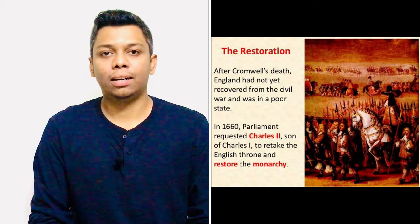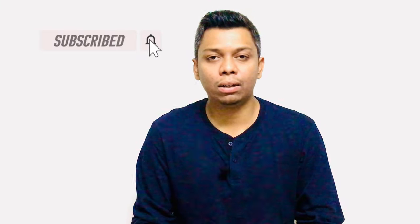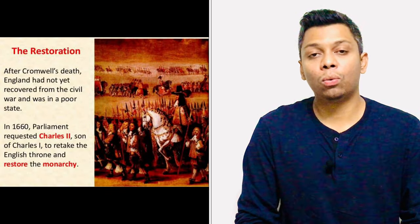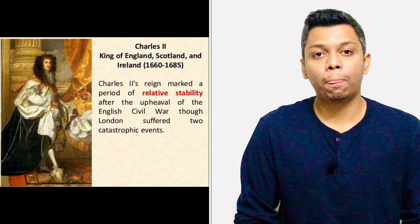The first and foremost point is why this age is called the Restoration Age. The monarchy was restored and regained in the year 1660 with the coronation of King Charles the Second on the 4th of April 1660, by the Declaration of Breda. The Restoration Age starts in 1660 and ends roughly in 1688.